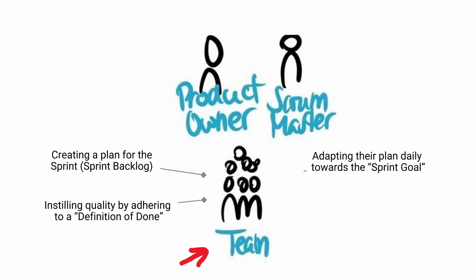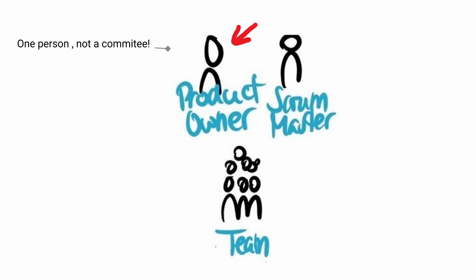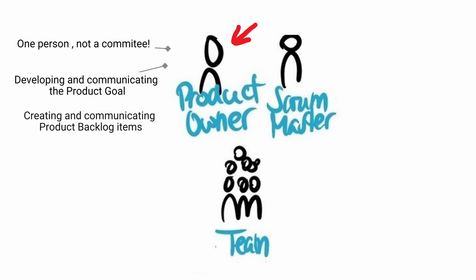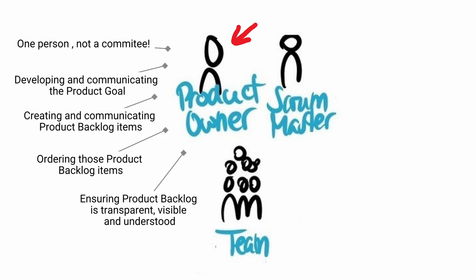Product owner. The product owner is one person and not a committee. They are accountable for maximising the value of the work of the team. Within Scrum they should be accountable for effective product backlog management, which includes developing and communicating the product goal, creating and communicating product backlog items, ordering those items, and ensuring that the product backlog is transparent, visible and understood. Note: the product owner may do the above work or may delegate the responsibility to others — regardless, the product owner remains accountable.